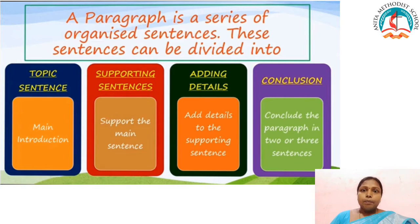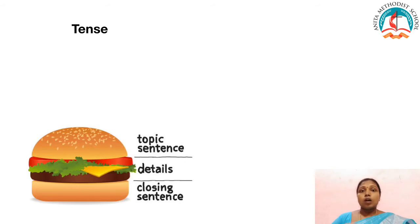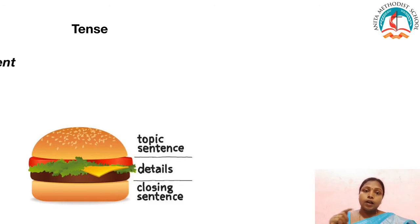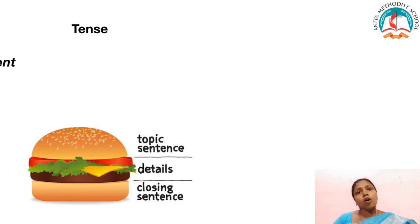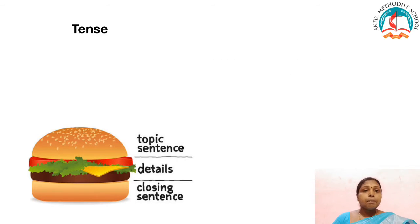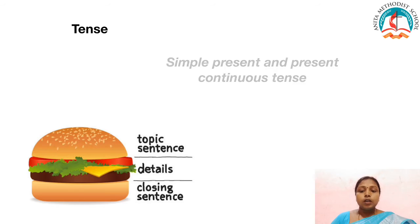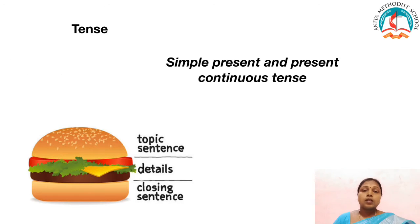When we write a paragraph, we have to follow tense. There are three tenses. Tense will tell you the action — whether it happens in the past, present, or future. When you write a story, we follow past tense because the story has already happened. But when we write a paragraph, we have to follow two tenses: simple present and present continuous tense, because we are writing about events happening now.